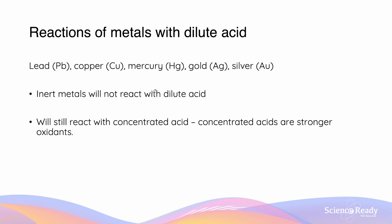Inert metals like lead, copper, mercury, gold, and silver will not react with dilute acid. However, they will still react with concentrated acid, as concentrated acids are stronger oxidants with a greater ability to ionise those metals. Oxidation is discussed in the video on redox reactions.